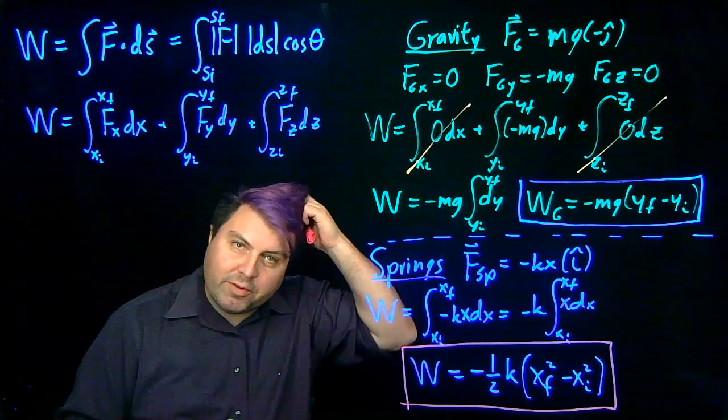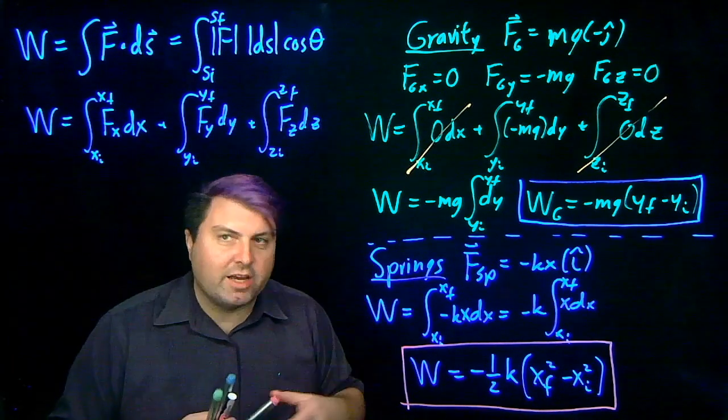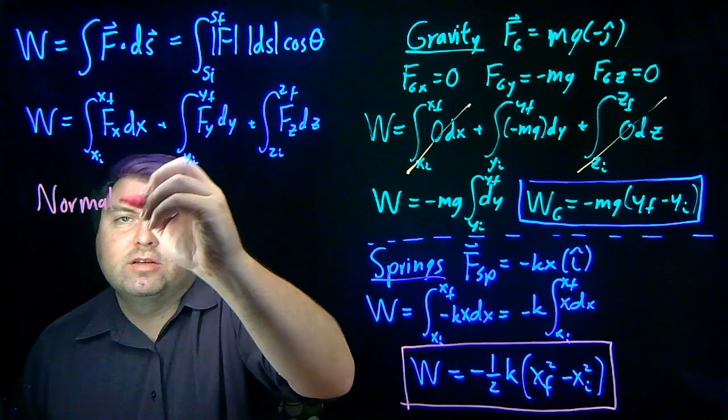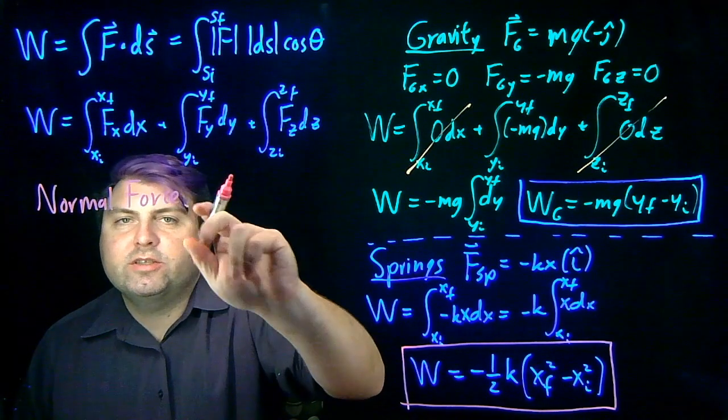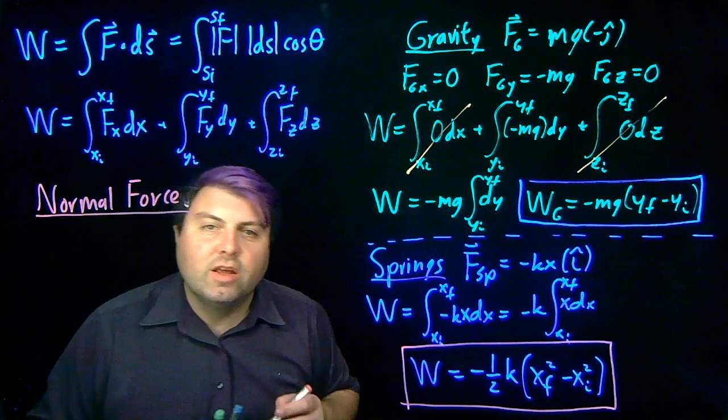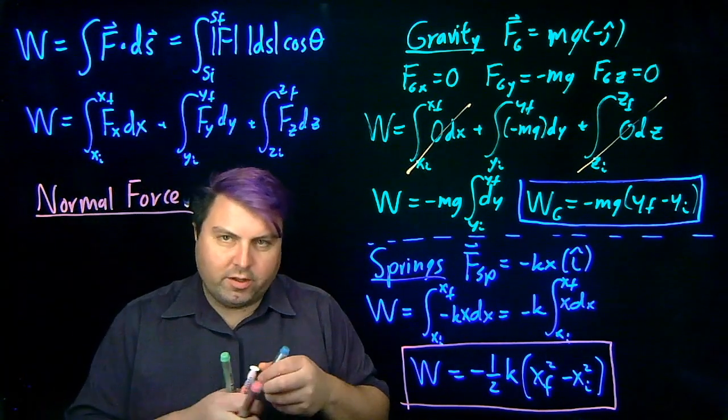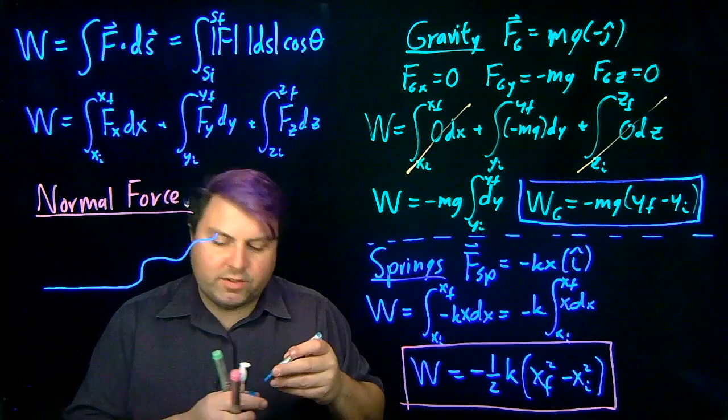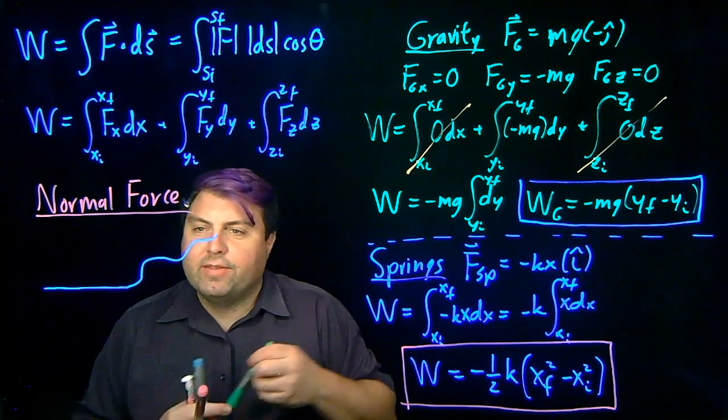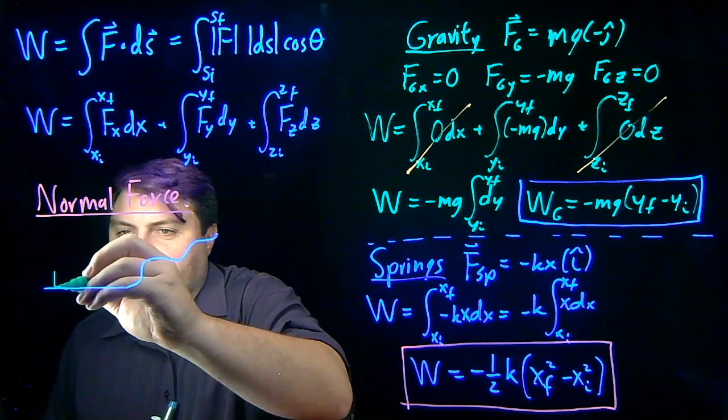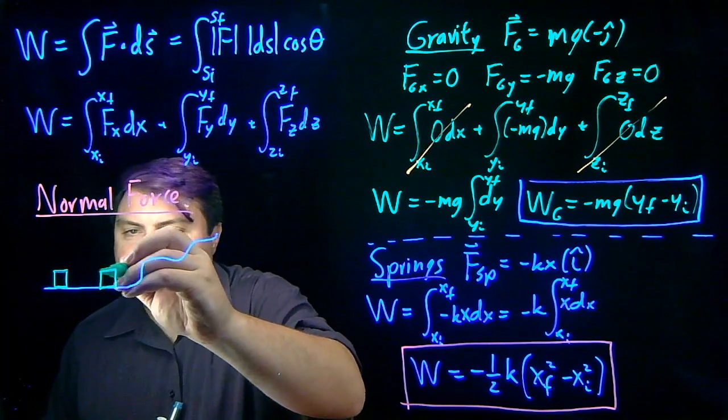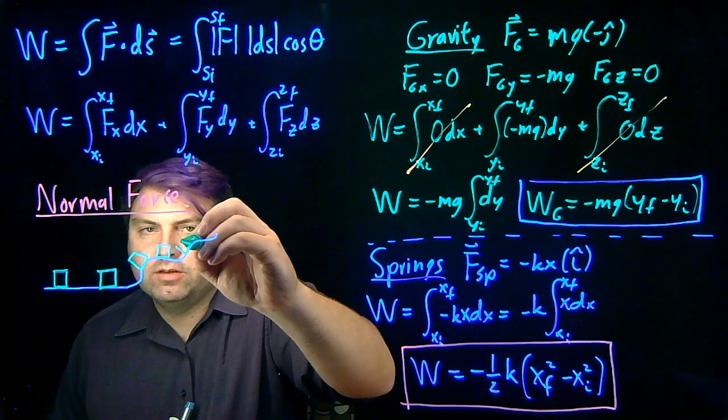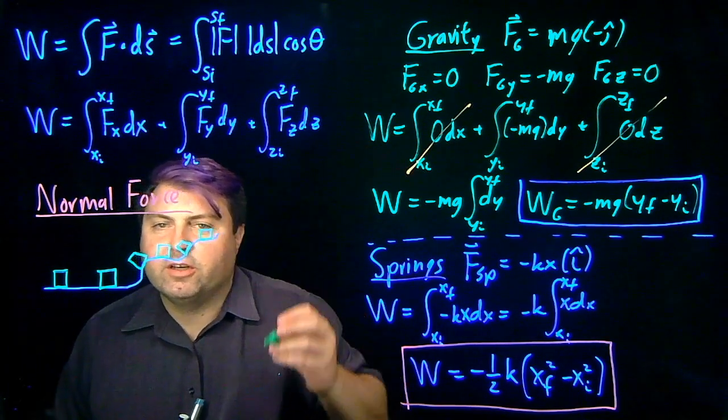So we have one last example that we can work with, and it's a little bit more of just kind of talking ourselves through it. But this is the normal force. And so for our normal force, we can look at either flat ground, or we can look at some interesting curves as we go up. And as we're looking at this, we can take a look at our box as it moves along this floor, and then as it moves along this somewhat interesting surface.